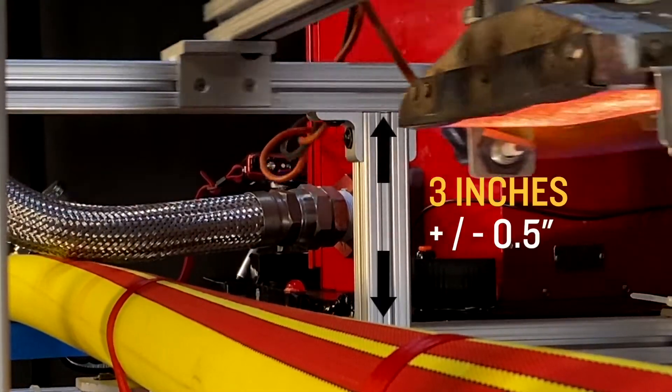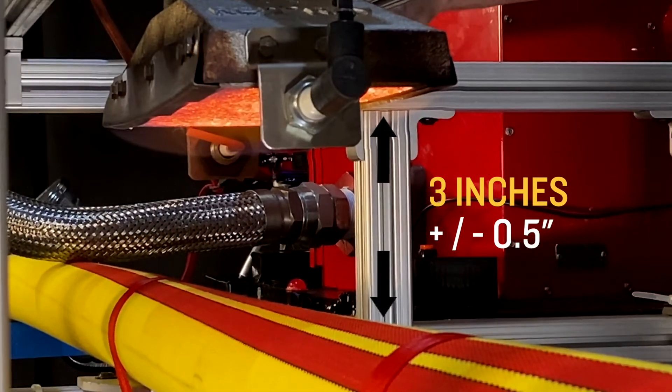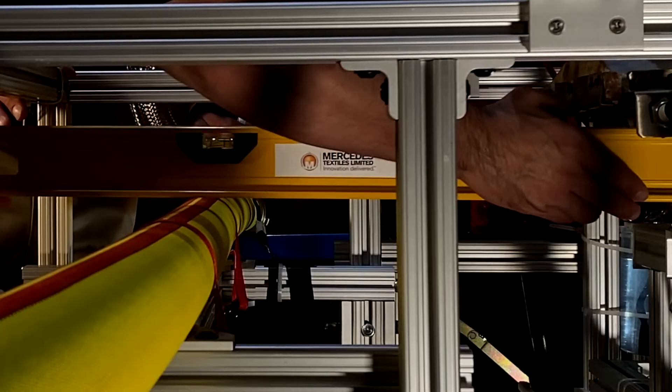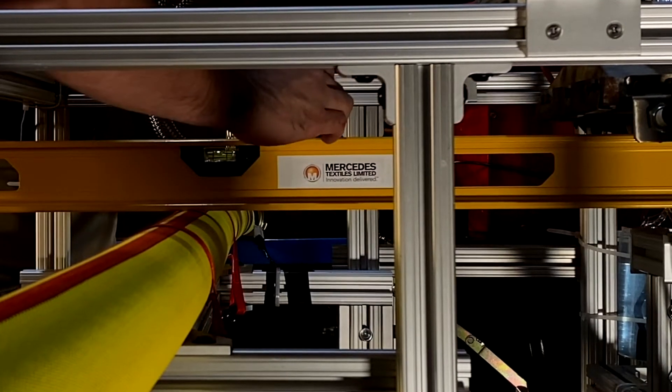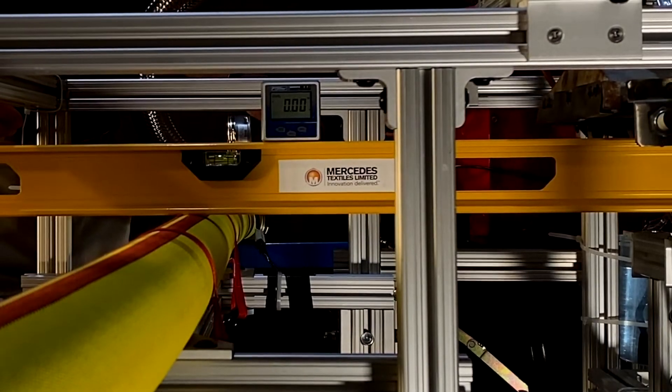The burner head should be 3 inches plus or minus 0.5 inches from the top of the hose. The top of the heat flux gauge should be perfectly level with the top of the hose to guarantee a uniform heat exposure along the sample.